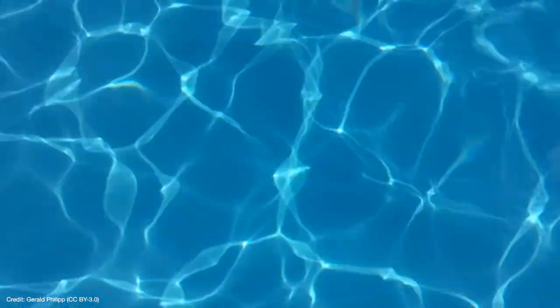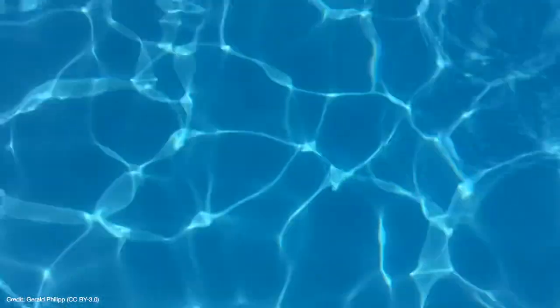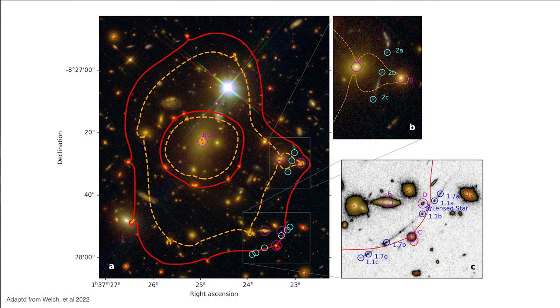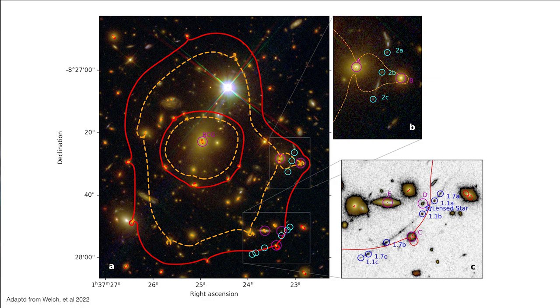In fact, we can see this effect in a swimming pool on a sunny day. The ripples in the water concentrate the sunlight into a network of bright regions at the bottom of the pool. Likewise, the critical lines of a gravitational lens trace out the rippled spacetime of the lensing cluster.